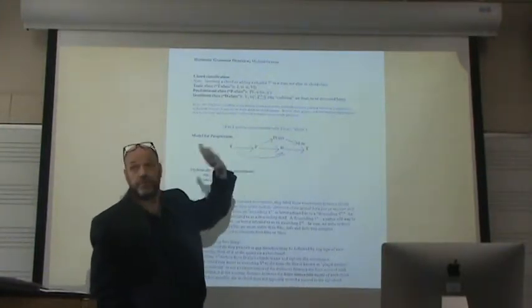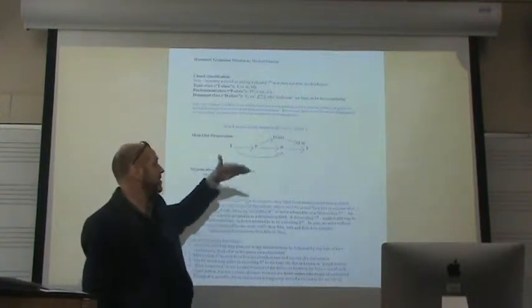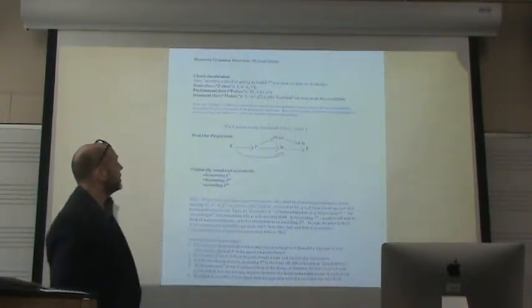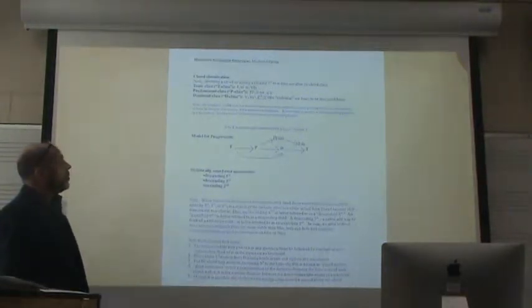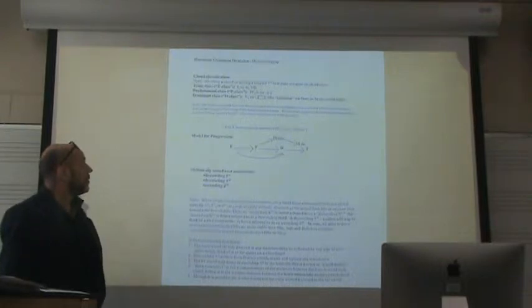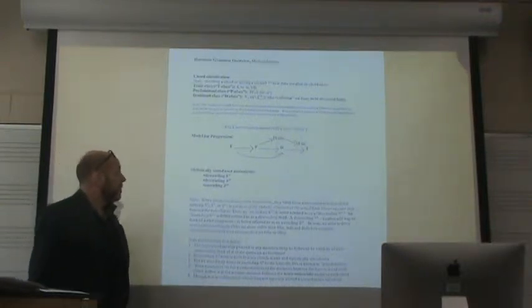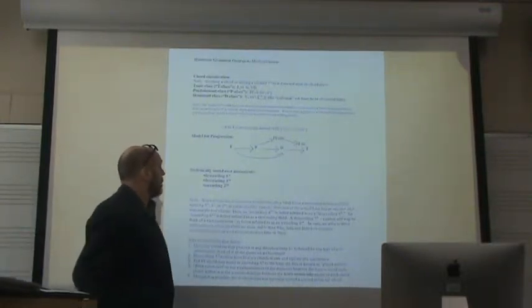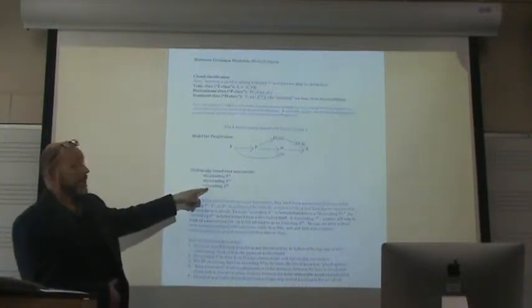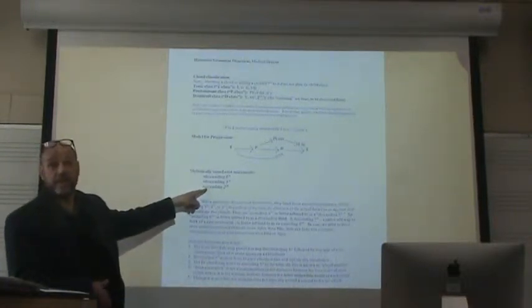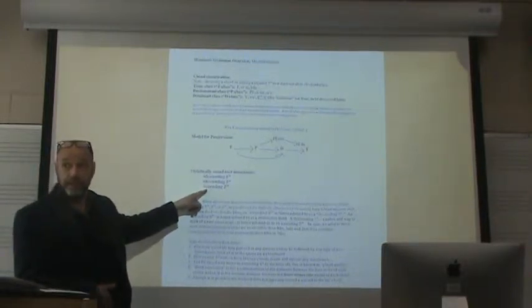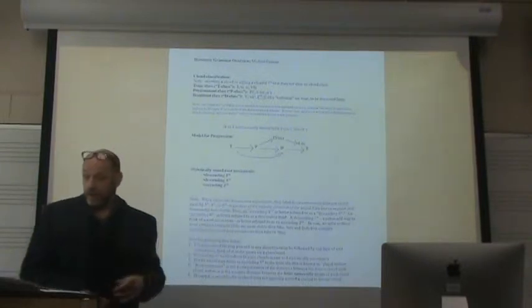So that is another ascending fifth. Tonic going to five, one to five, is another ascending fifth. And the other ones on this chart are going to be descending fifths. Speaking of root movements, three of them: stylistically sound root movements. You're going to have a prevalence in common practice music of movements down by fifth, down by third, and up by second.